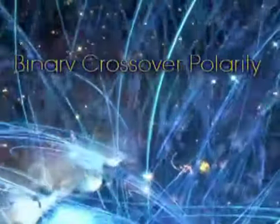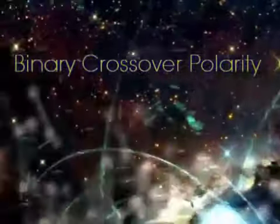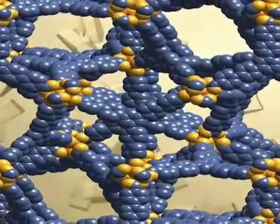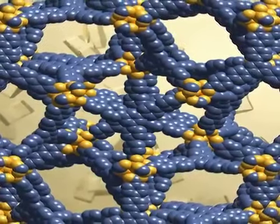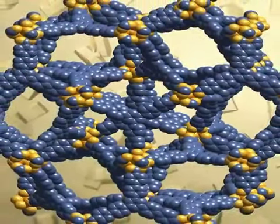Binary crossover polarity is a universal 4-dimensional principle. It is how number becomes movement based on a binary principle. In chemistry, binary crossover polarity creates the lattice structures of crystals. The crystal lattice structure of silicon dioxide, formed by binary crystal polarity, is the basic structure of rock, both mineral and molten.